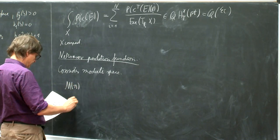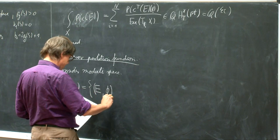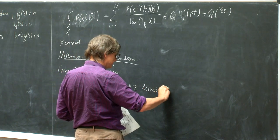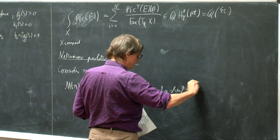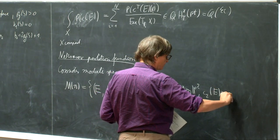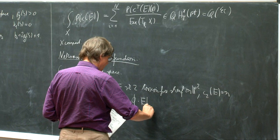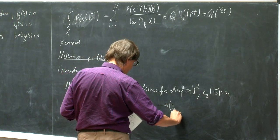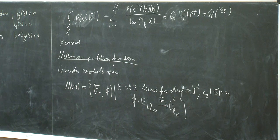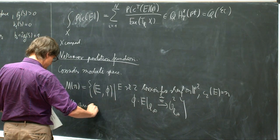This is our framed sheaves on P2. So M of N — I just consider the rank 2 case for now. This is pairs of E, which is a torsion-free sheaf on P2, a rank 2 torsion-free sheaf on P2 whose second Chern class is N, and phi, which is a trivialization of the restriction to the line at infinity — an isomorphism to the trivial bundle. So this is smooth and quasi-projective, but it's not compact.